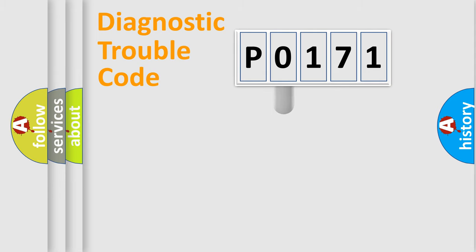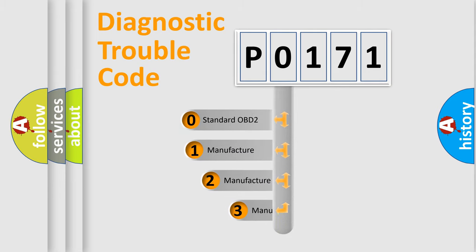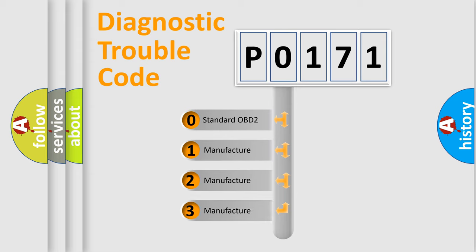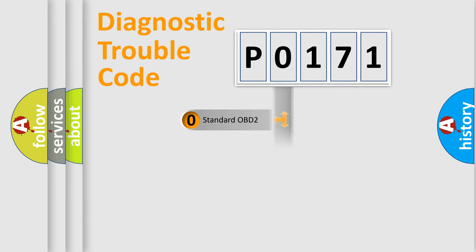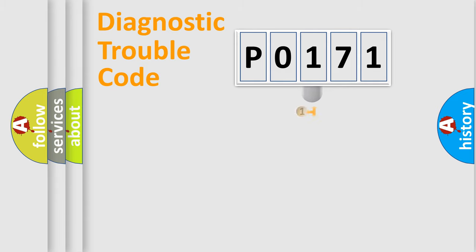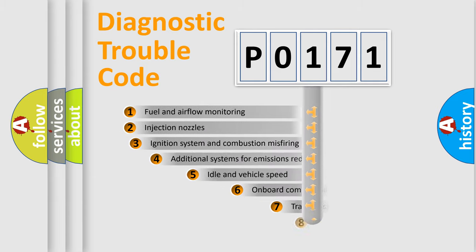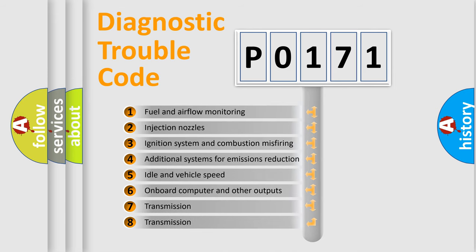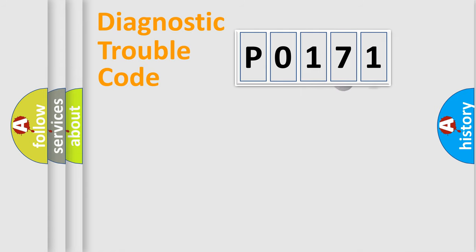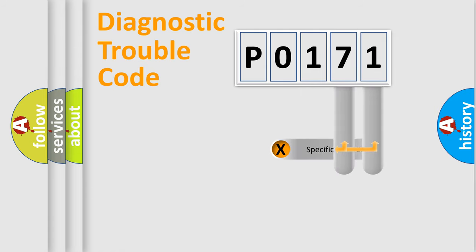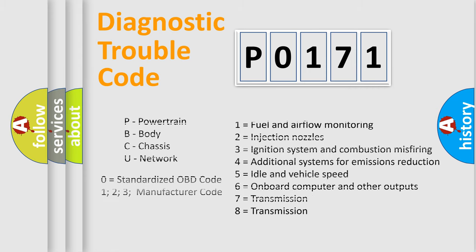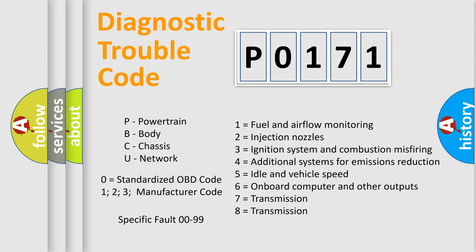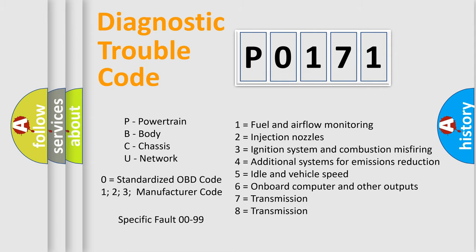This distribution is defined in the first character of the code. If the second character is expressed as zero, it is a standardized error. In the case of numbers 1, 2, or 3, it is a more specific car-specific error. The third character specifies a subset of errors, and only the last two characters define the specific fault of the group. This division is valid only if the second character code is expressed by the number zero.